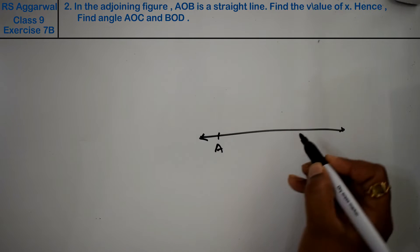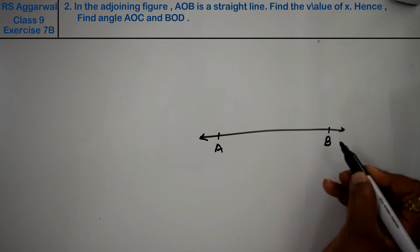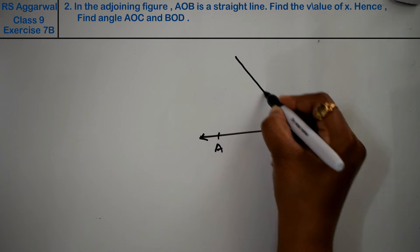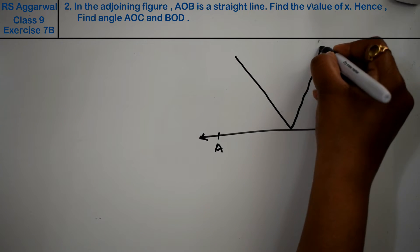There is one line, line AB, and one D here and one D here.